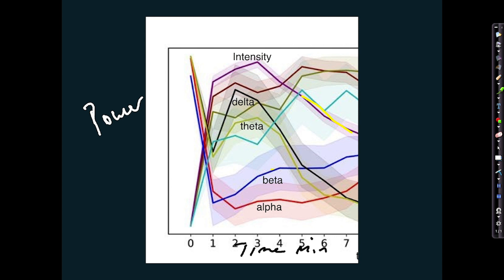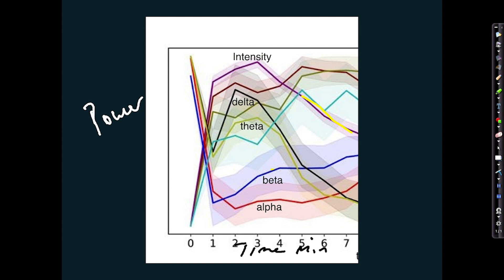But then we see something slightly unexpected in the delta band. Whereas the alpha and beta bands just drop off with the intensity and then slowly start to recover, with the delta band and the theta band something quite different happens. You actually see an initial drop in delta and theta, but then it actually starts to increase with the intensity of the drug experience. So let's redraw this to make it clearer, because this is quite important.